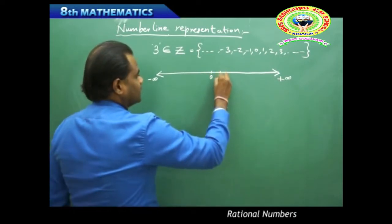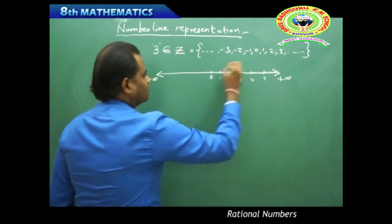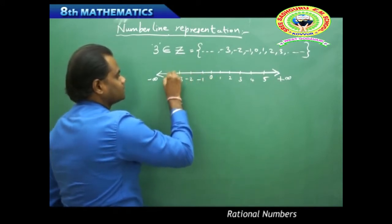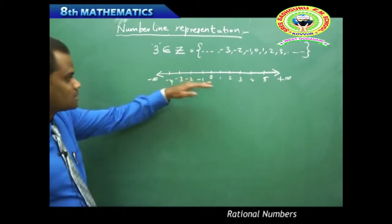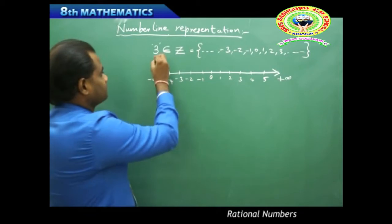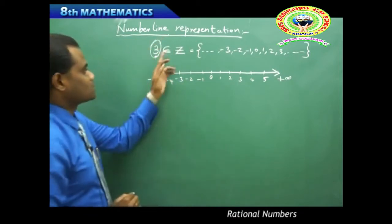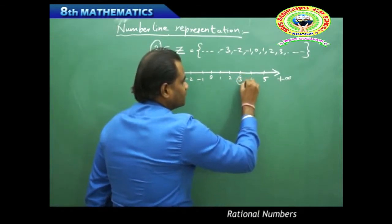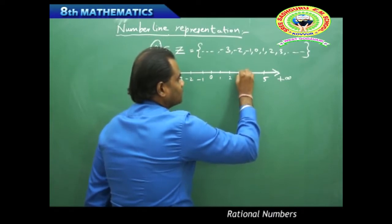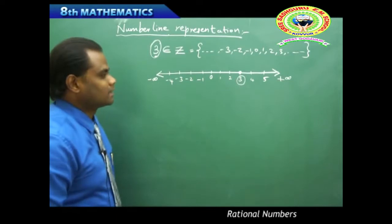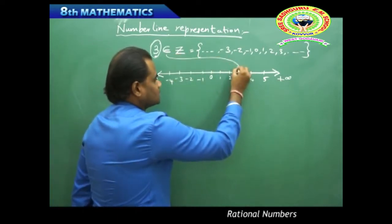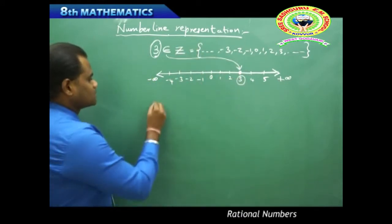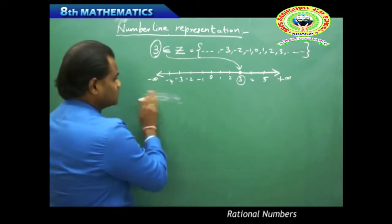On the right of 0 I have 1, 2, 3, 4, 5, and on the negative side I have negative 1, negative 2, negative 3, negative 4, and so on. This is the number line representation for integers. To represent the value 3 belonging to integers, I identify 3 and circle it on the number line.